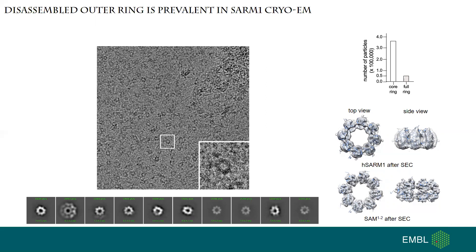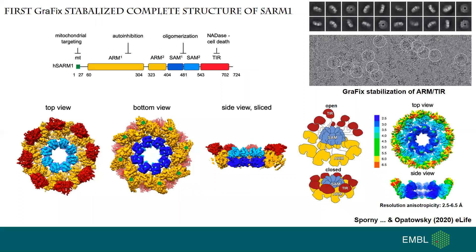We changed the strategy. By using nanobodies, we were able to stabilize the outer wings and obtained beautiful particles, as you see here on the right. We could reconstruct the first 3D structure, which allowed the modeling of the ARM domain and also the fitting of SAM and TIR domains. The structure was anisotropic — the outer part was not as well defined as the inner part — but from that we could already define a model with an open and a closed conformation of SARM1, depicted here as a cartoon with the open form on top and the closed form at the bottom.